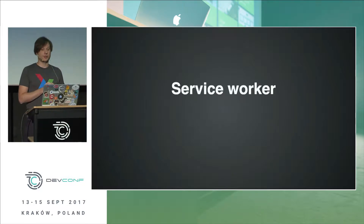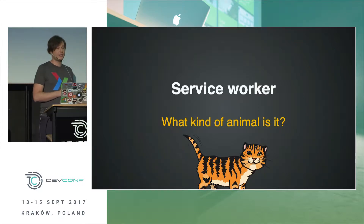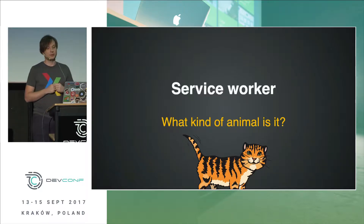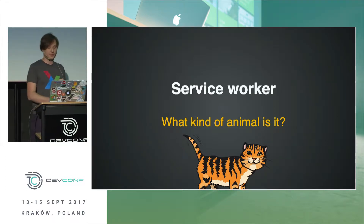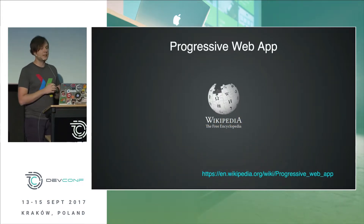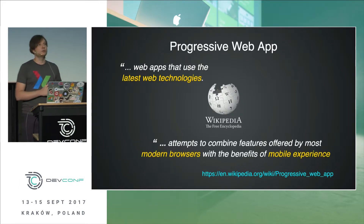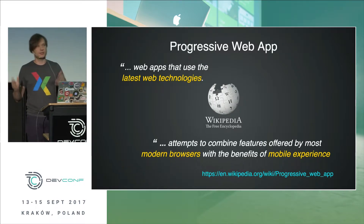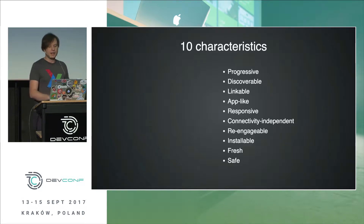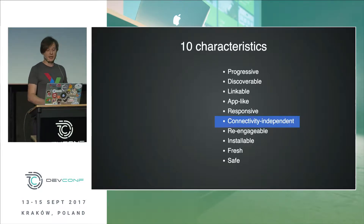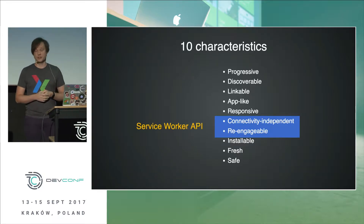Our today's hero is a service worker. What kind of animal is it? A pet or a wild one? Let's explore it a bit first. I assume you have some basic knowledge about the progressive web app concept already, so the reminder will be quite quick and mainly focused on my personal experiences. According to the current definition in Wikipedia, progressive web apps are just apps using the latest browser APIs, trying to take the best from two quite different universes: web and mobile native. Among the ten classical characteristics of PWAs, I'd emphasize connectivity independence and re-engagement possibilities, because it's something totally new for the web — and it's all powered by the Service Worker API.